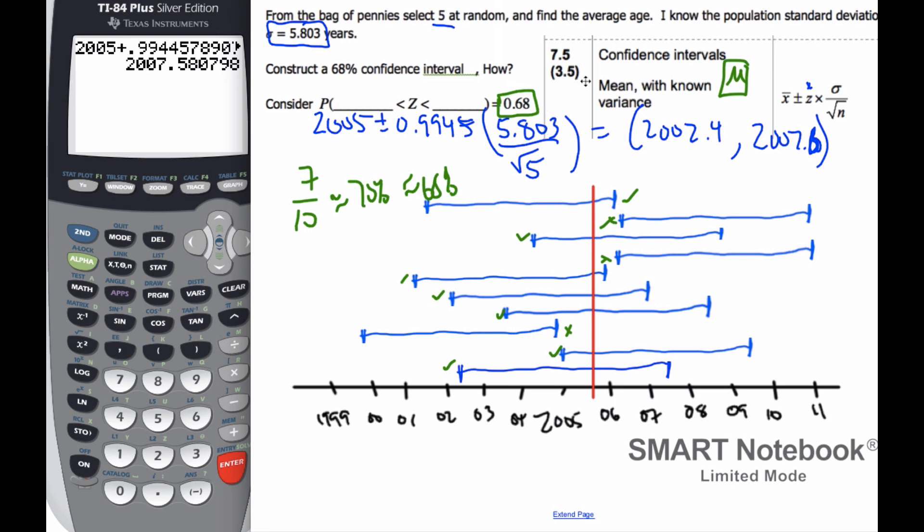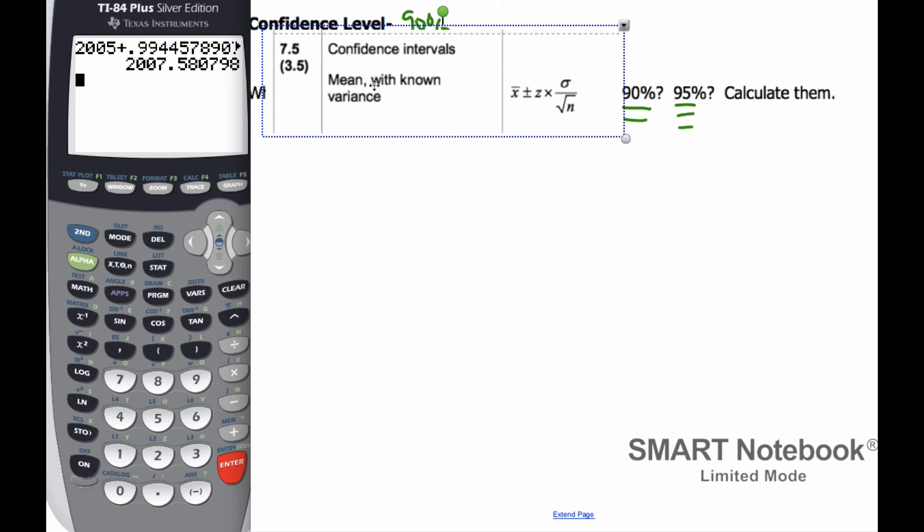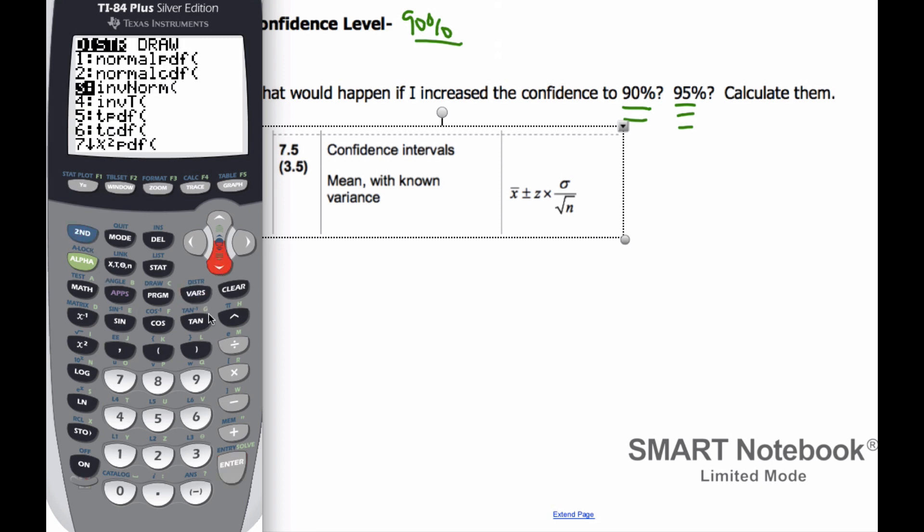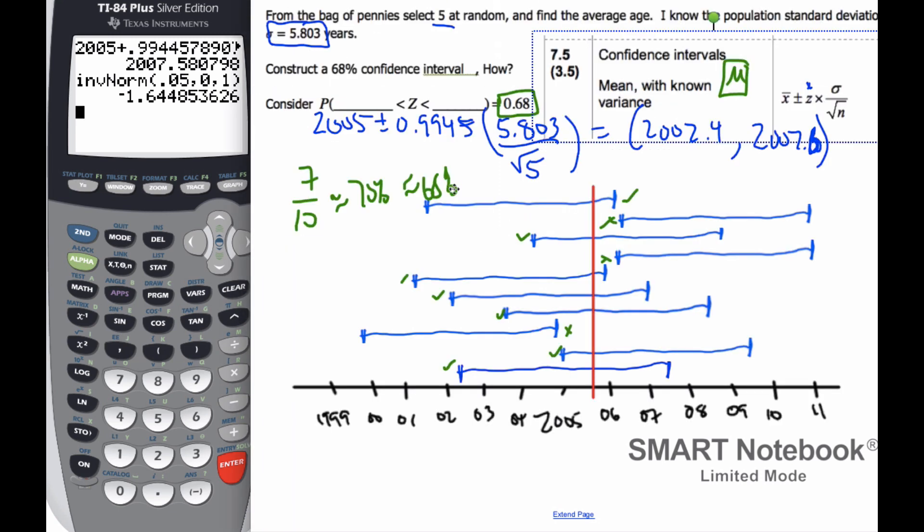And if I also think about it, the calculation, my calculation, the only thing that's going to change is Z star. And if I do a 90% confidence interval, if I go to my calculator and if I do my inverse normal for 90%, which means I really have 0.05 on each tail, this value is larger, which means my confidence interval, if I was going to do 90% versus a 68% confidence interval, the confidence interval is going to be larger. It's going to be larger, something like this. And so you're more sure of capturing the true value.